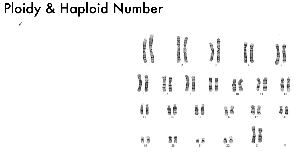Today we're going to be talking about ploidy and haploid number. Sometimes you can confuse them, or you don't really remember which one's which. So what I have is an example of a human, which you can use to memorize what each one means and then go forth from there.